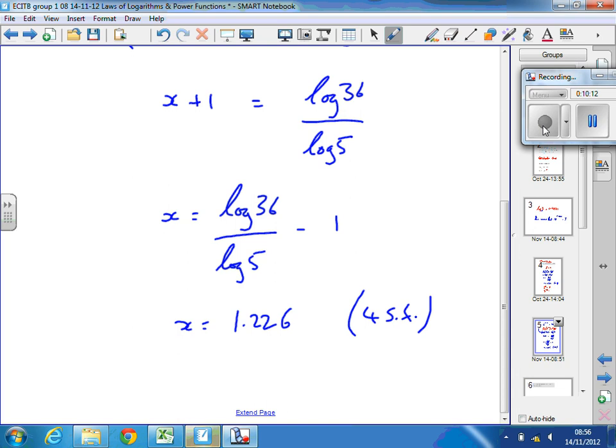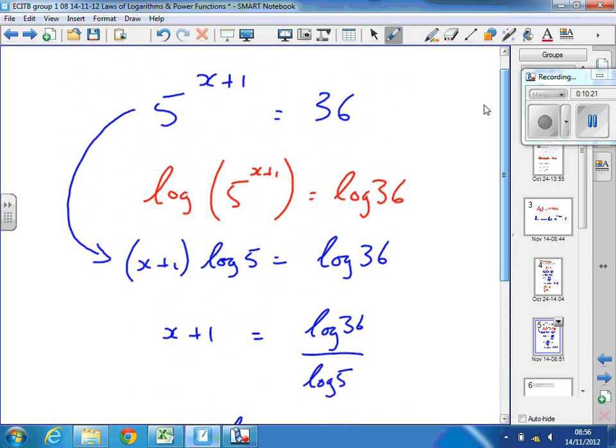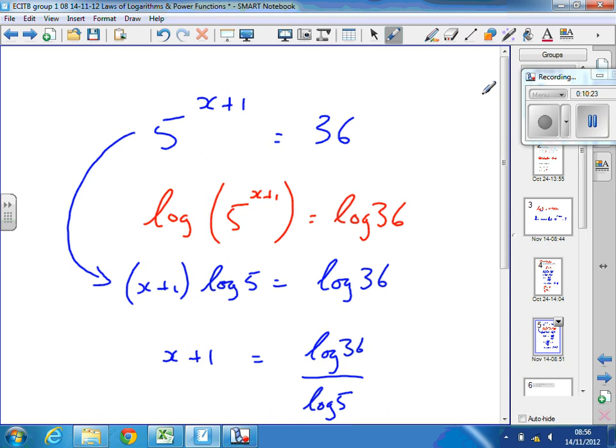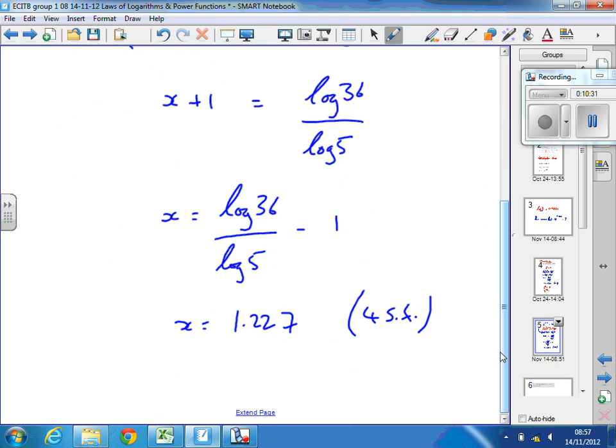So, we've got x equals 1.227 if we round correctly. And to check, again, we put that 1.227 back in here. So, 5 to the power of 2.227 should give you 36 as a check. Always check.